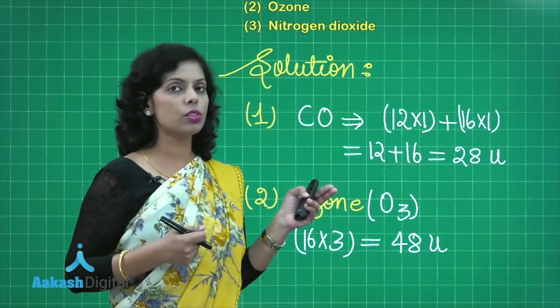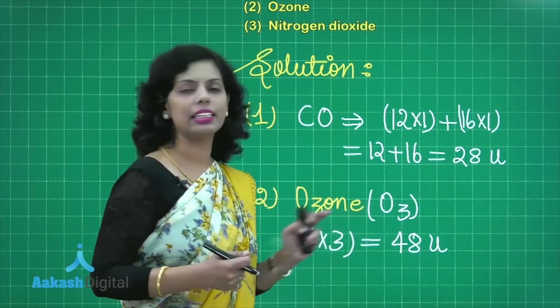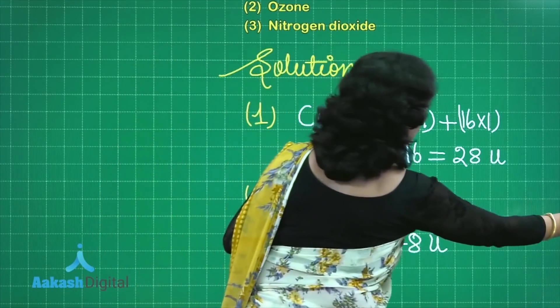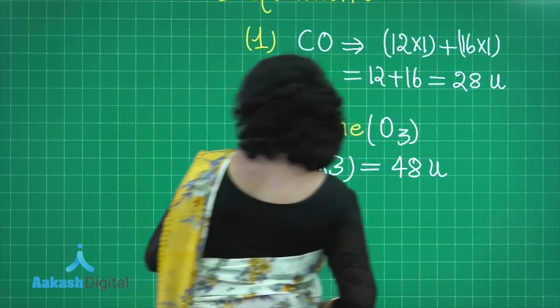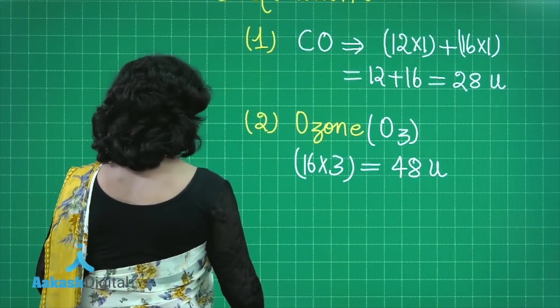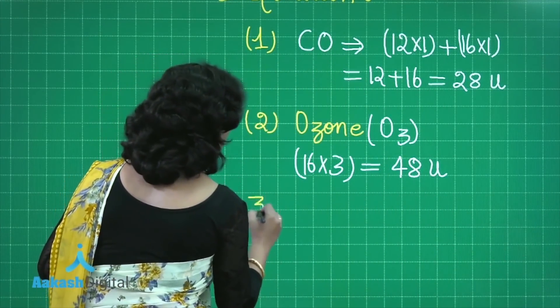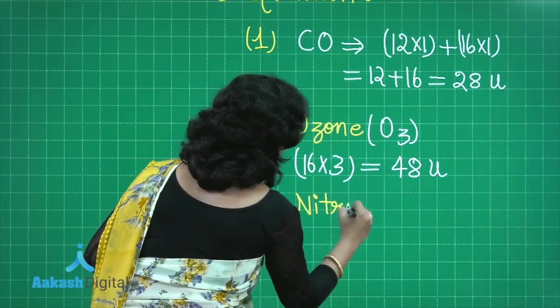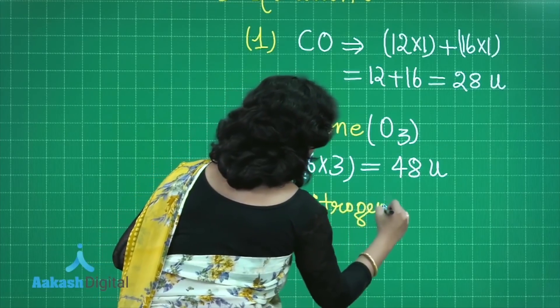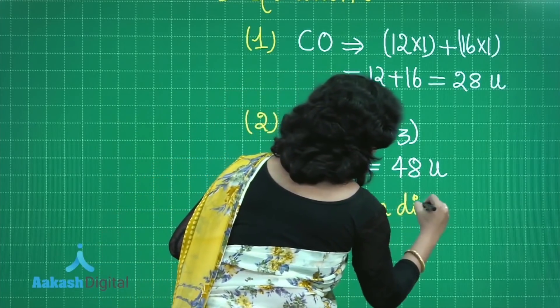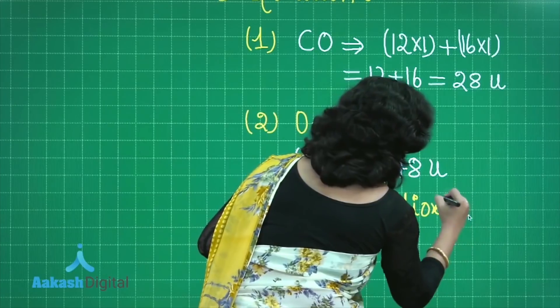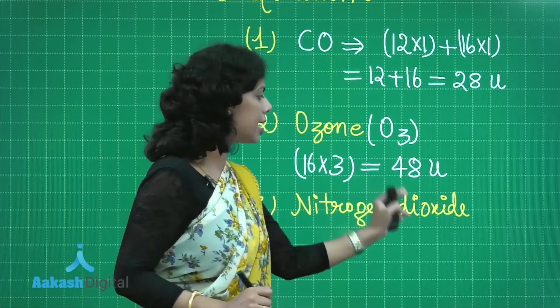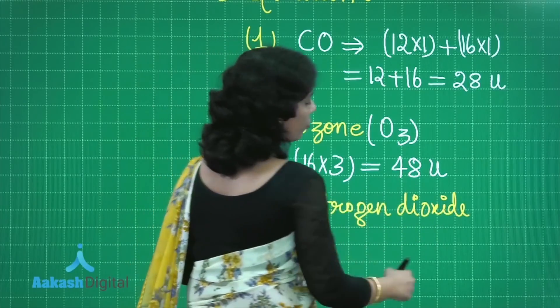That is its molecular mass. And what about the gram molecular mass of ozone? That is 48 gram. After this we have the third example also, that is nitrogen dioxide. So I'll mark here the third one, nitrogen dioxide. You might be thinking what's the formula for this. The name is nitrogen dioxide, one atom of nitrogen.